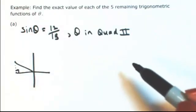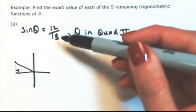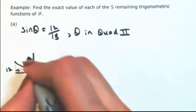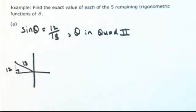So using my right triangle trigonometry, sine is opposite over hypotenuse. So the opposite is going to be 12, hypotenuse is going to be 13. So I have a missing side, let me call that x.